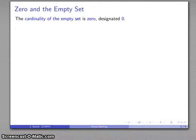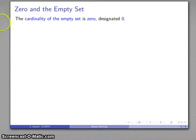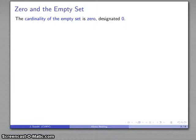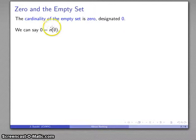We've already talked about cardinality, so let's say that the cardinality of the empty set — we're going to give this the name of 0, and we're going to give it the symbol 0. So the cardinality of the empty set is 0, and we write it using our standard zero symbol. These two things both correspond to the cardinality of the empty set.